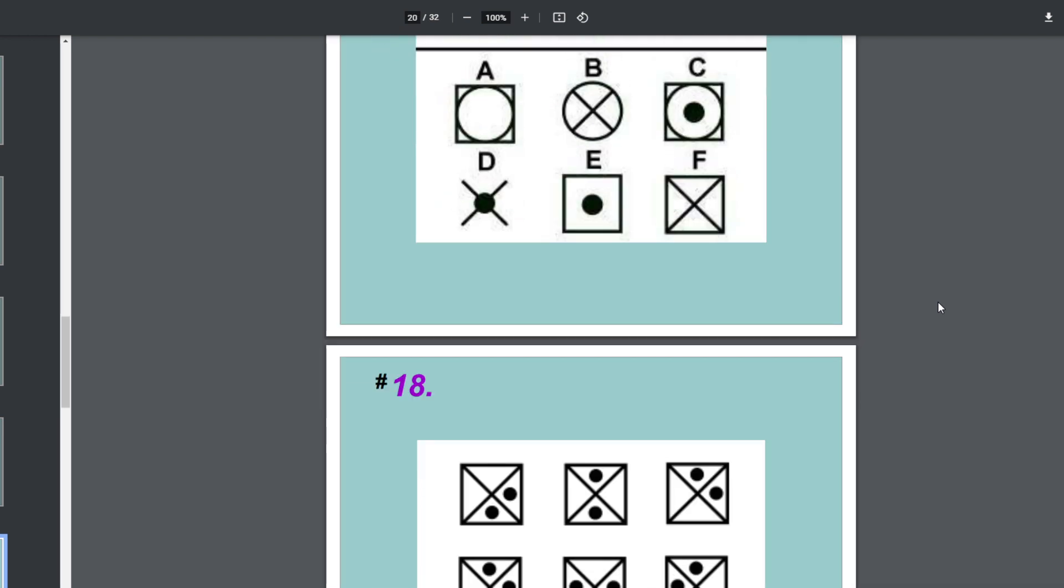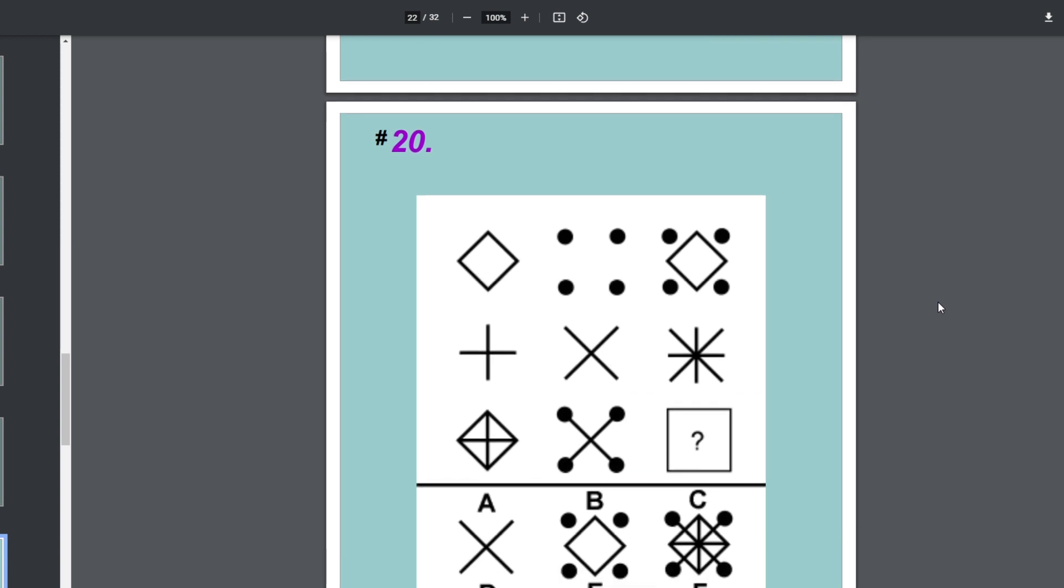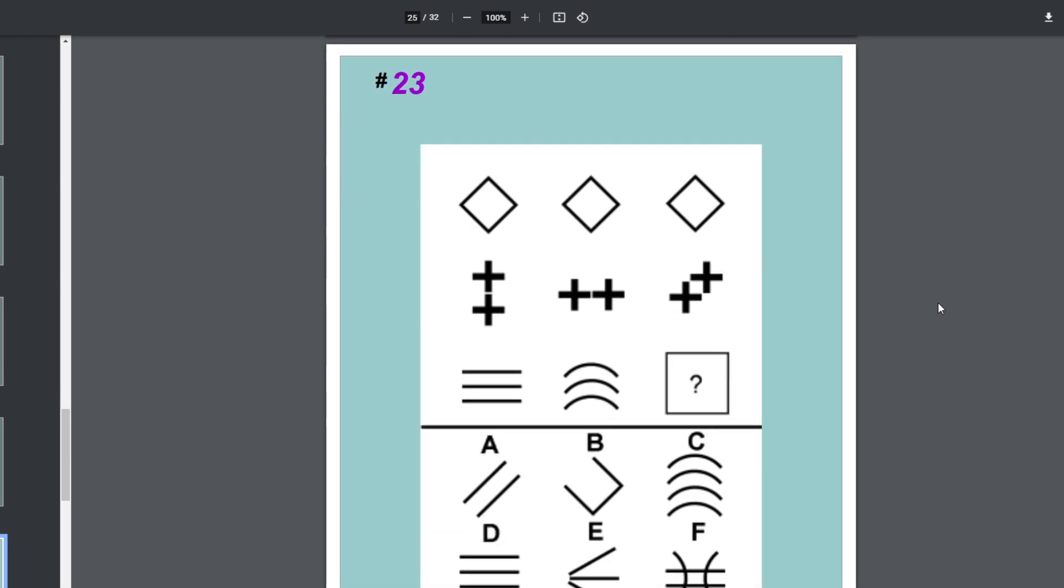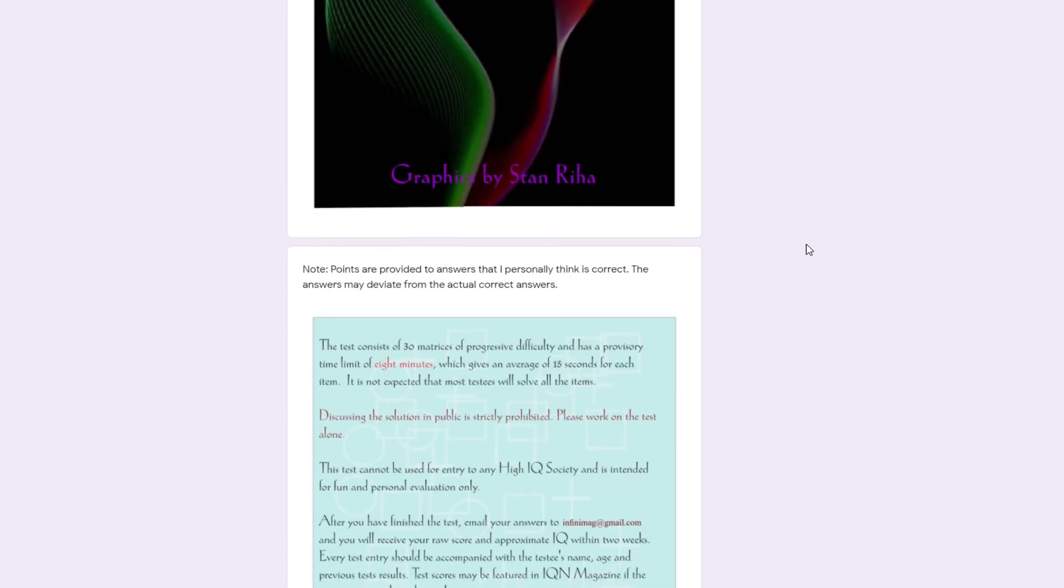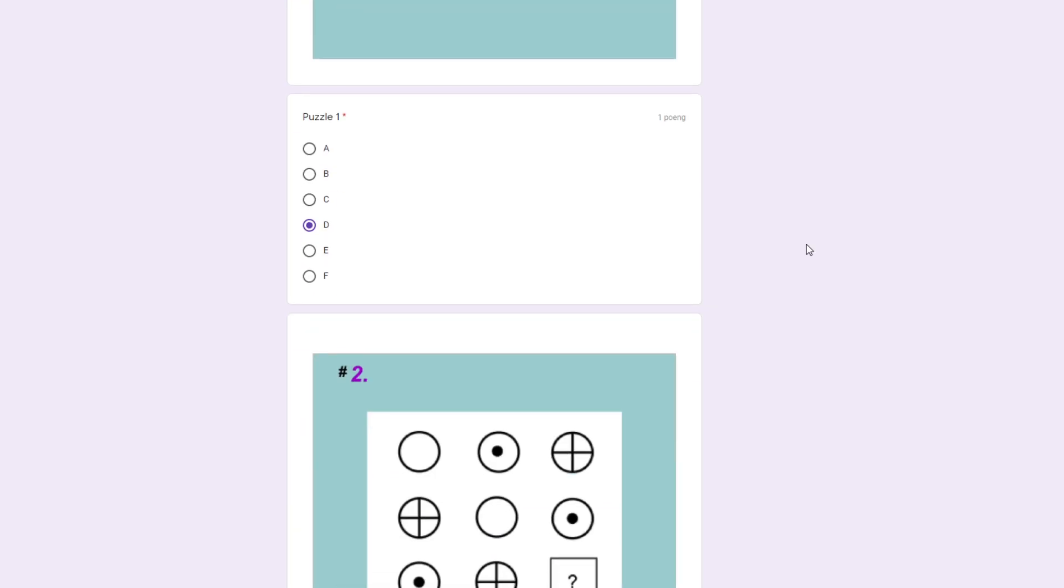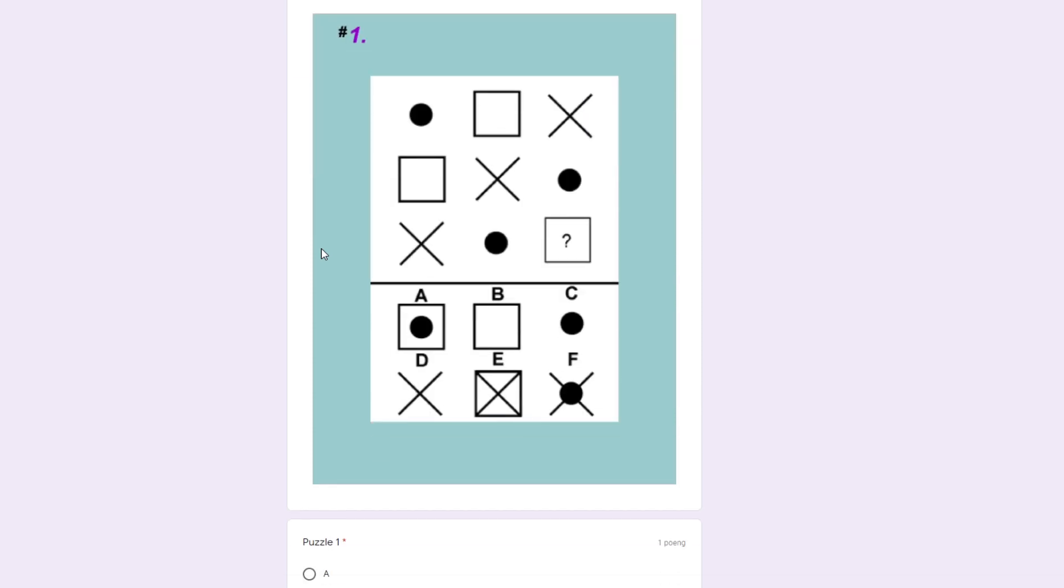By the way, the test is in PDF form, so you can't click on the answers and check which one is correct. To deal with this problem, I made a Google Form out of the IQ test with clickable answers. So if you want, you can go to the form, start a timer of 8 minutes and see how many correct answers you are able to get within the time limit.